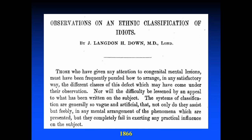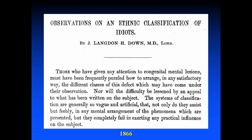Now we jump back to 1866 and put Langdon Down back into context. He publishes the paper 'Observations on an Ethnic Classification of Idiots.' He wrote: 'Among the large number of idiots and imbeciles that have come under my observation, a considerable portion can be fairly referred to one of the great divisions of the human family other than the class from which they have sprung. A very large number of idiots are congenital Mongols. So marked is this that when placed side by side, it is difficult to believe that the specimens — the children — compared are not children of the same parents.'